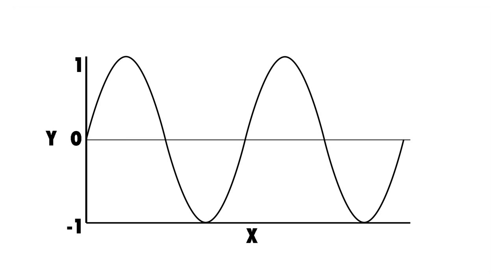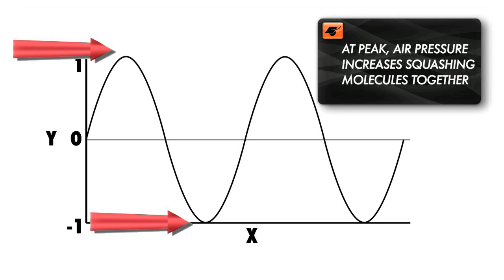The graph also tells us where the wave is strongest and weakest. At its peak, the air pressure is increased and the molecules in the air are squashed together. The opposite is true when the wave hits the low point.